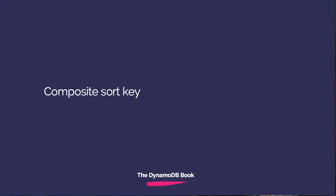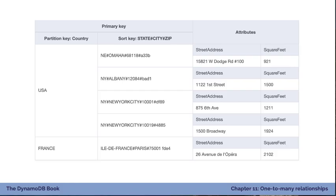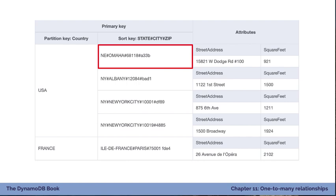The fifth strategy is a composite sort key — different from a composite primary key. A composite primary key has two parts: a partition key and a sort key. With a composite sort key, you encode multiple values into the sort key to filter at different levels. Imagine a corporation with store locations worldwide. You'd use country as the partition key, and the sort key encodes multiple values: state, then a hash, then city, then a hash, then zip code, then a hash, then the store ID. This allows you to fetch at multiple levels in the hierarchy.